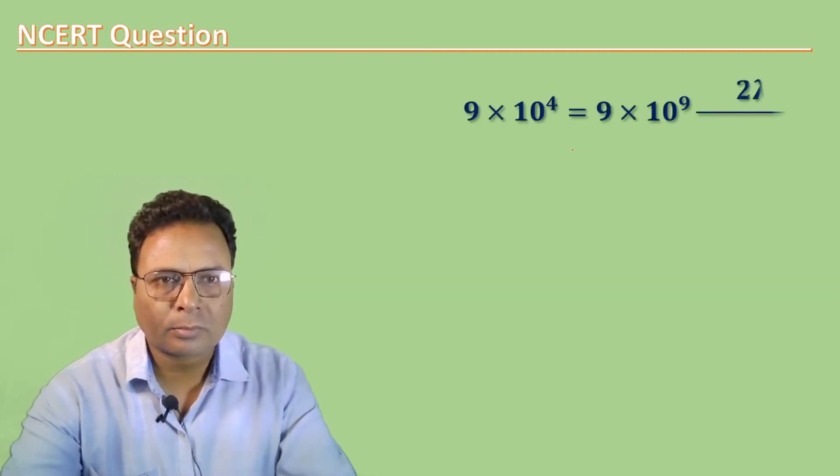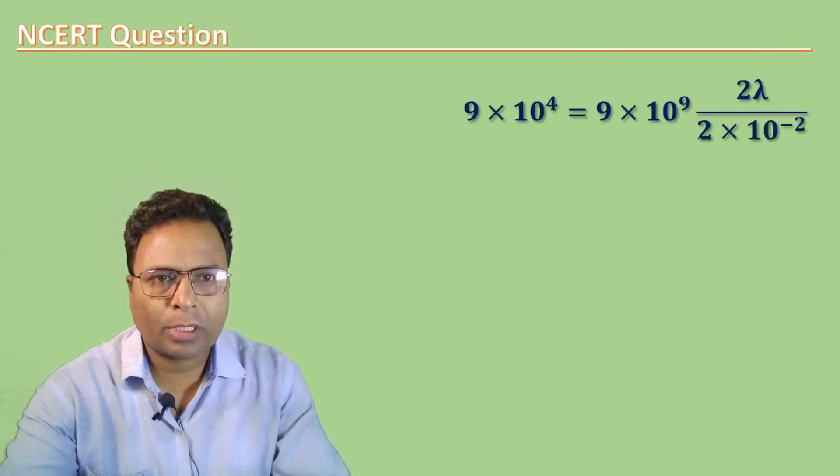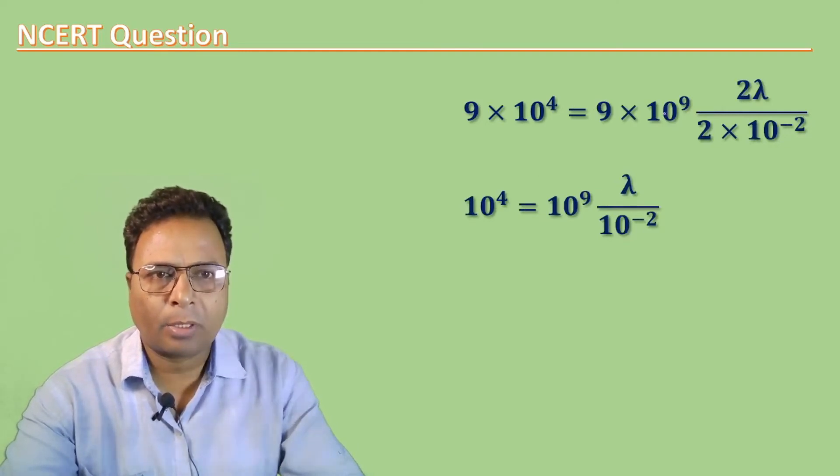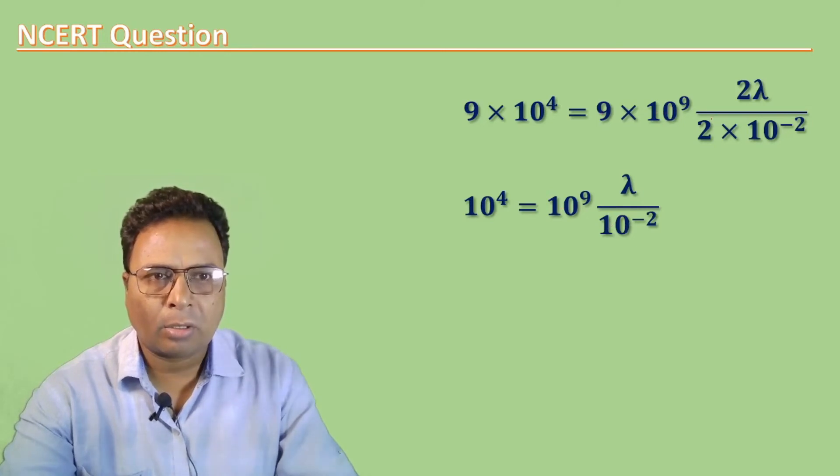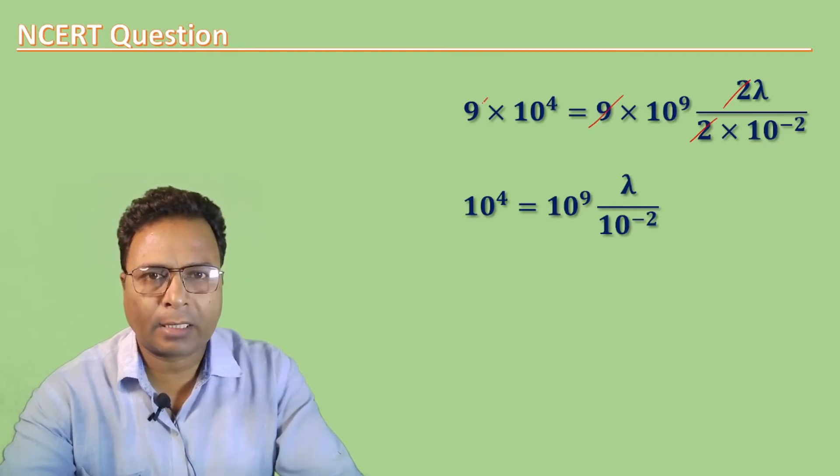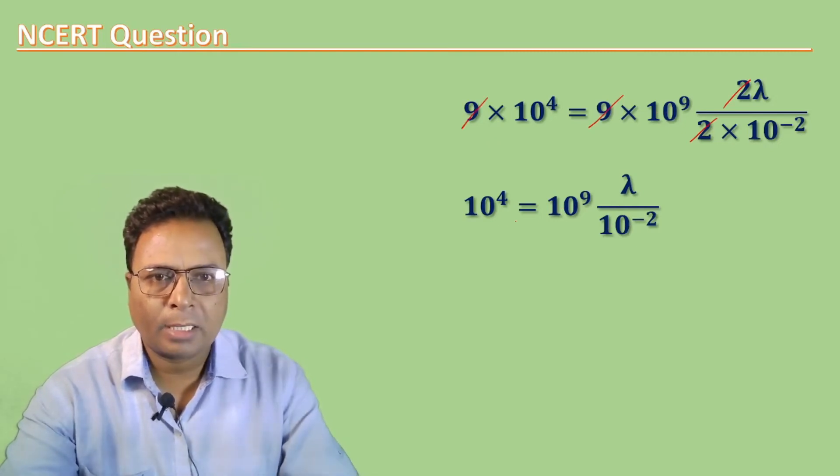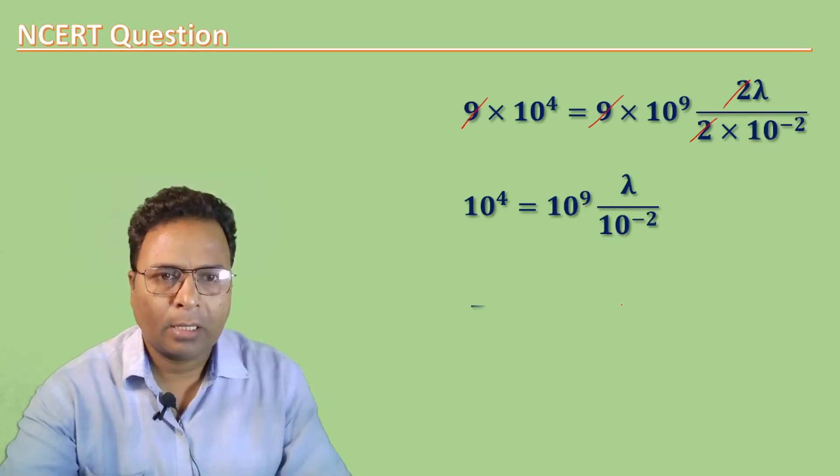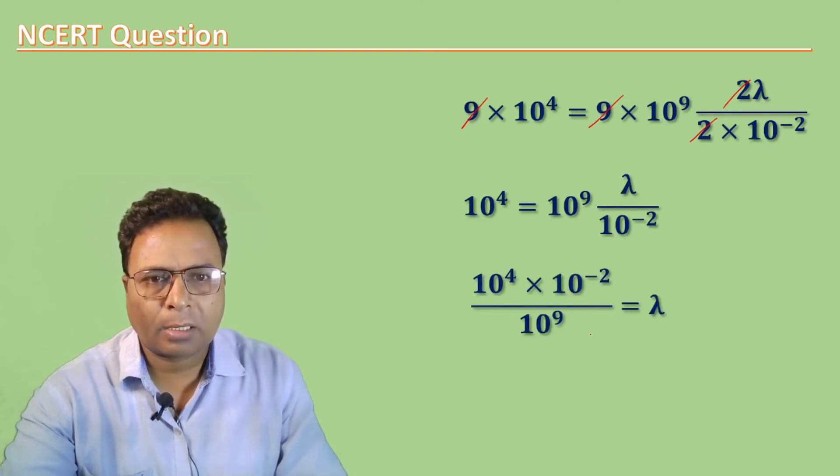Canceling 9 from both sides and simplifying, we get 10⁴ and 10⁻², so lambda equals 10⁴ × 10⁻² / 10⁹.